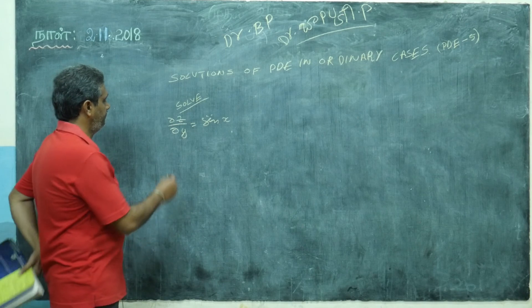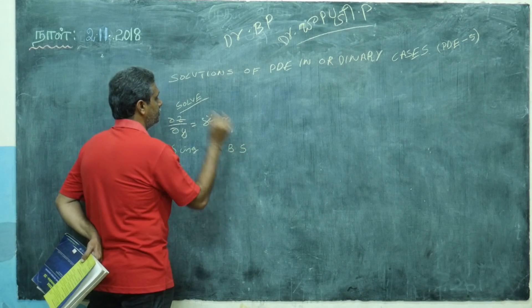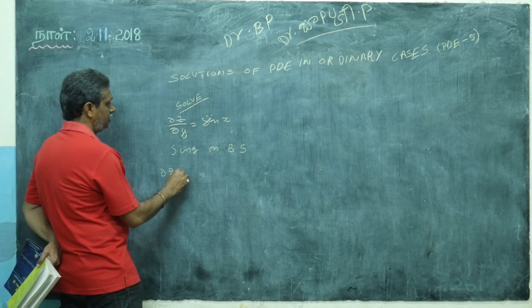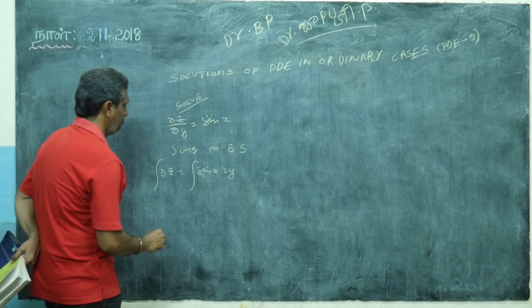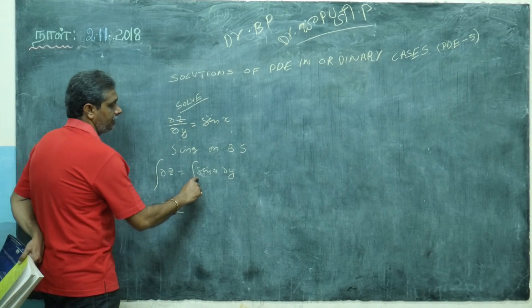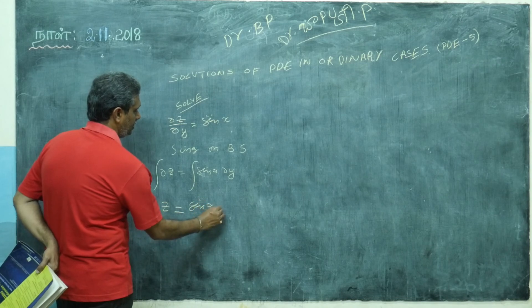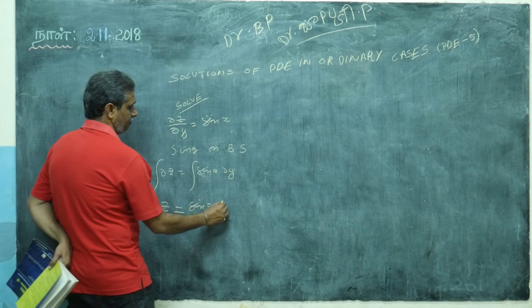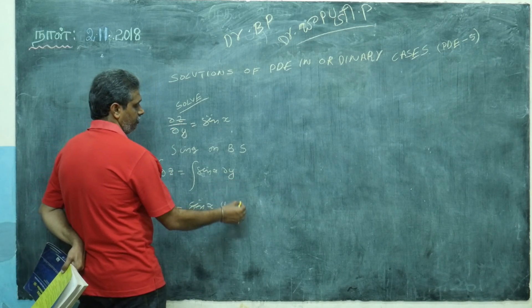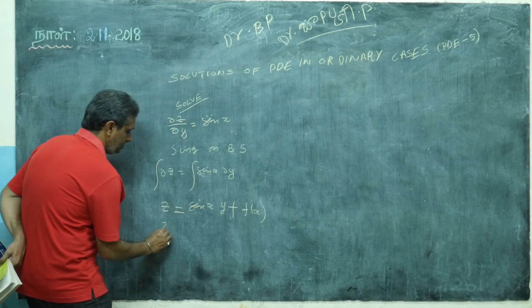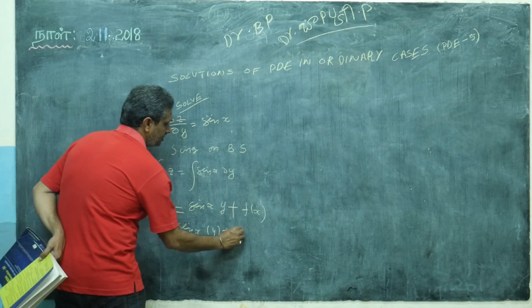What I will do: integrating both sides. So you get ∂z = sin x · dy, meaning y is the variable and x is constant. So I take sin x out, integrate dy to get y, plus a constant written as f(x) with respect to y. The solution is z = sin x · y + f(x).